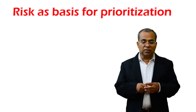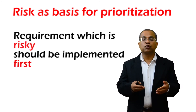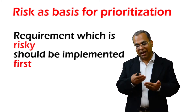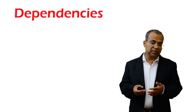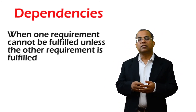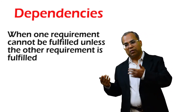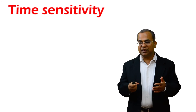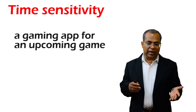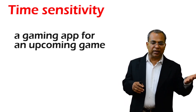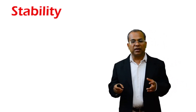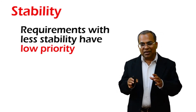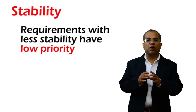Then risk: a requirement which is risky should be implemented first, because if something goes wrong, we have time to recover or do something about it. Then dependencies: certain requirements must be implemented beforehand so that other requirements can be implemented. Then time sensitivity: for example, a gaming company must have a game ready before a gaming season begins, so things must be done on time priority. Then stability: requirements that are unstable can wait, and you pick up requirements which are stable for implementation.